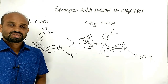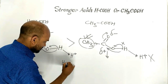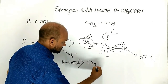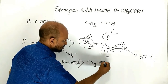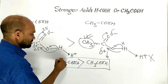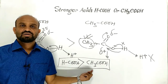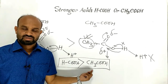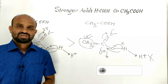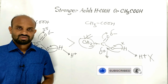Simply stated: formic acid is a stronger acid than acetic acid — that is, methanoic acid is stronger than ethanoic acid. This is all about the relative strength of formic acid and acetic acid.